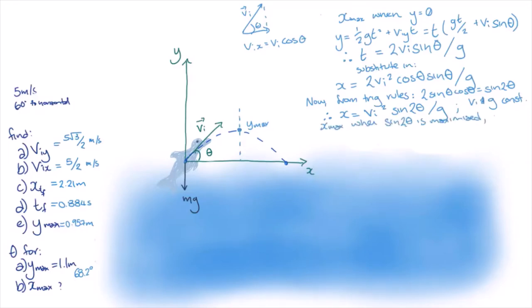The greatest value that sin can ever have is 1, which occurs when the argument is 90 degrees. This means that 2 theta equals 90 degrees when sin is 1 and the range is maximized, which means that theta equals 45 degrees.